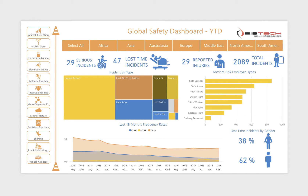The year-to-date dashboard displays a year-to-date view of the data and displays incidents by incident type, employee type and gender, along with trends for key frequency rate metrics such as lost time incidents, serious injuries and total recorded injuries.